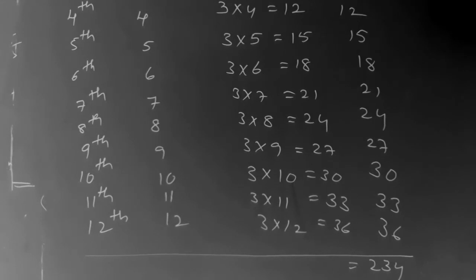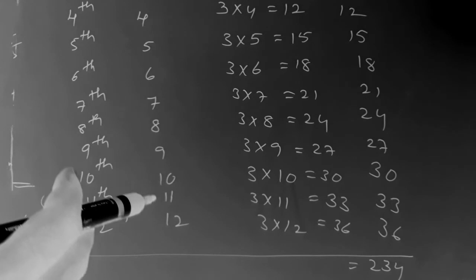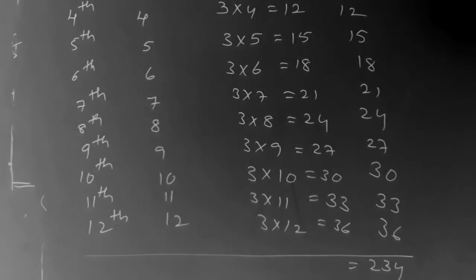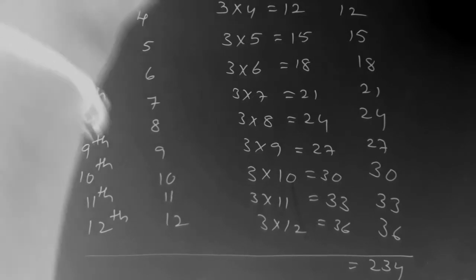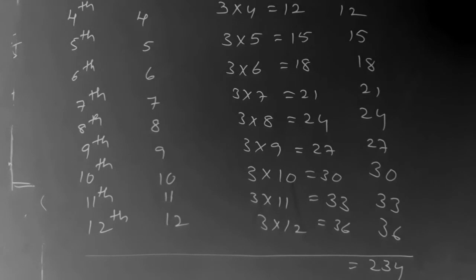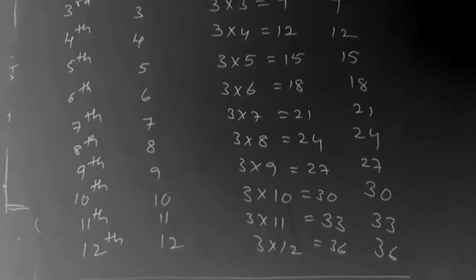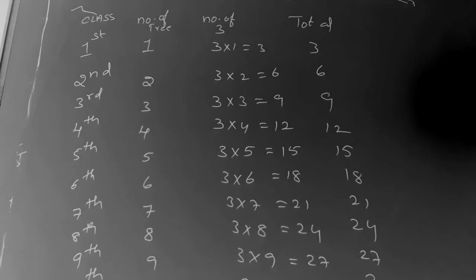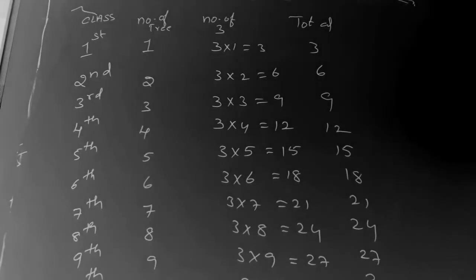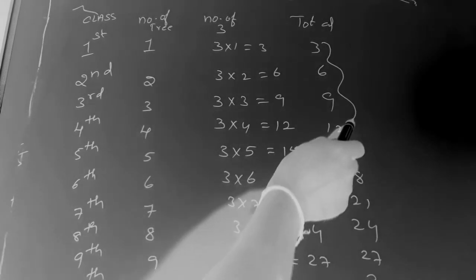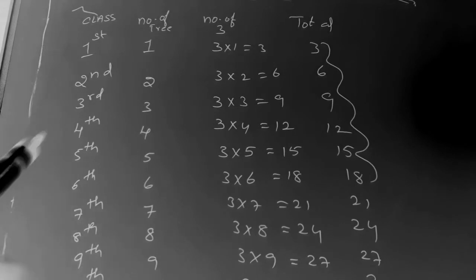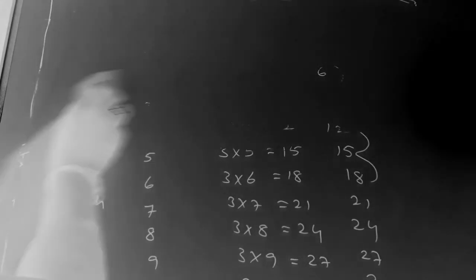This is the normal or traditional method of solving the problem. Here classes are very few — only up to twelve — so we can solve it this way. But if classes increase, it becomes very difficult. So now we will solve using the formula method — arithmetic progression. The values 3, 6, 9, 12, 15, 18 form an AP series with a common difference of 3.